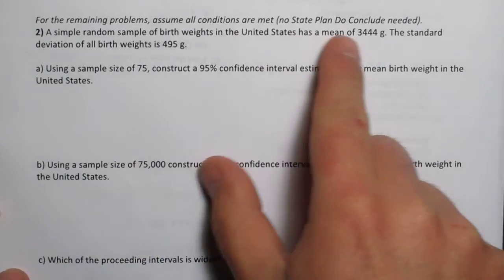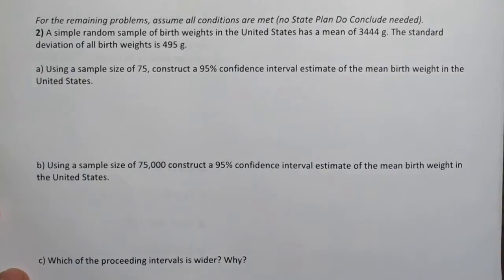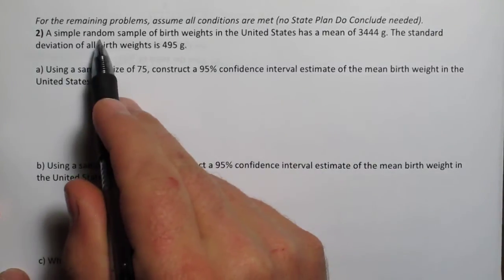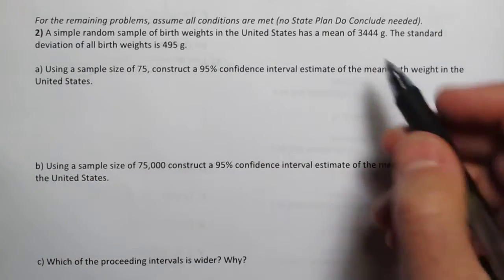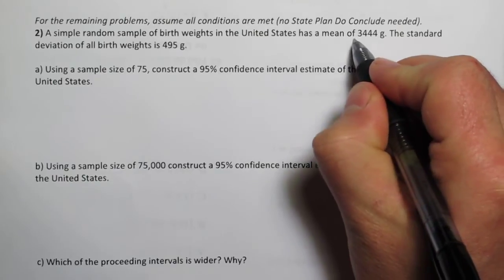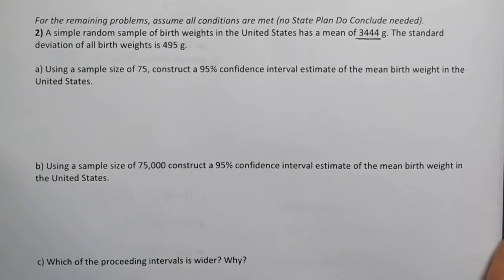On the second problem here it says no state plan do conclude as needed. Here's the information we have. A simple random sample of birth weights yields a sample mean of 3444.